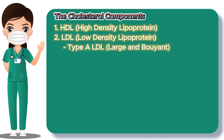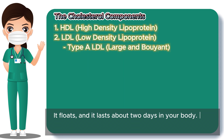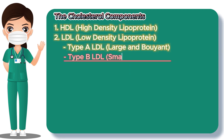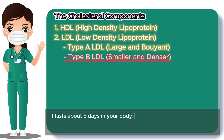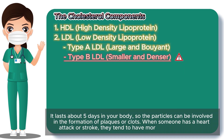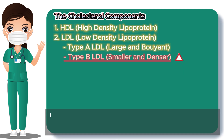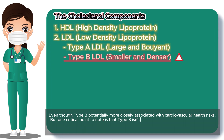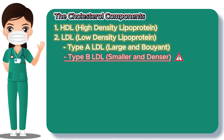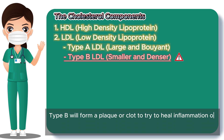Type A is large and buoyant — it floats, lasts about two days in your body, is not involved in any plaquing or clotting, and is considered the more normal LDL. Type B is smaller and denser. It lasts about five days in your body, so the particles can be involved in the formation of plaques or clots. When someone has a heart attack or stroke, they tend to have more type B LDL. Even though type B is potentially more closely associated with cardiovascular health risks, it is actually not bad — it is produced as a healing response, like a bandage, to the damage that a high-carb, high-sugar diet inflicts.